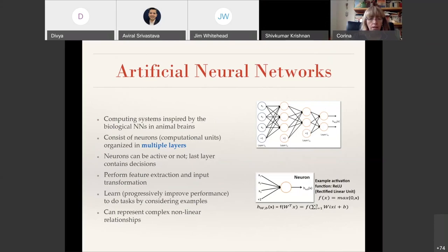These networks often perform feature extraction and input transformations with a goal of learning to do tasks by considering labeled examples. They can represent highly complex nonlinear relationships. For our talk, we will consider networks that use rectified linear units or ReLU activations that compare the output of a neuron with a threshold value, for example zero, and forward that value moving forward.